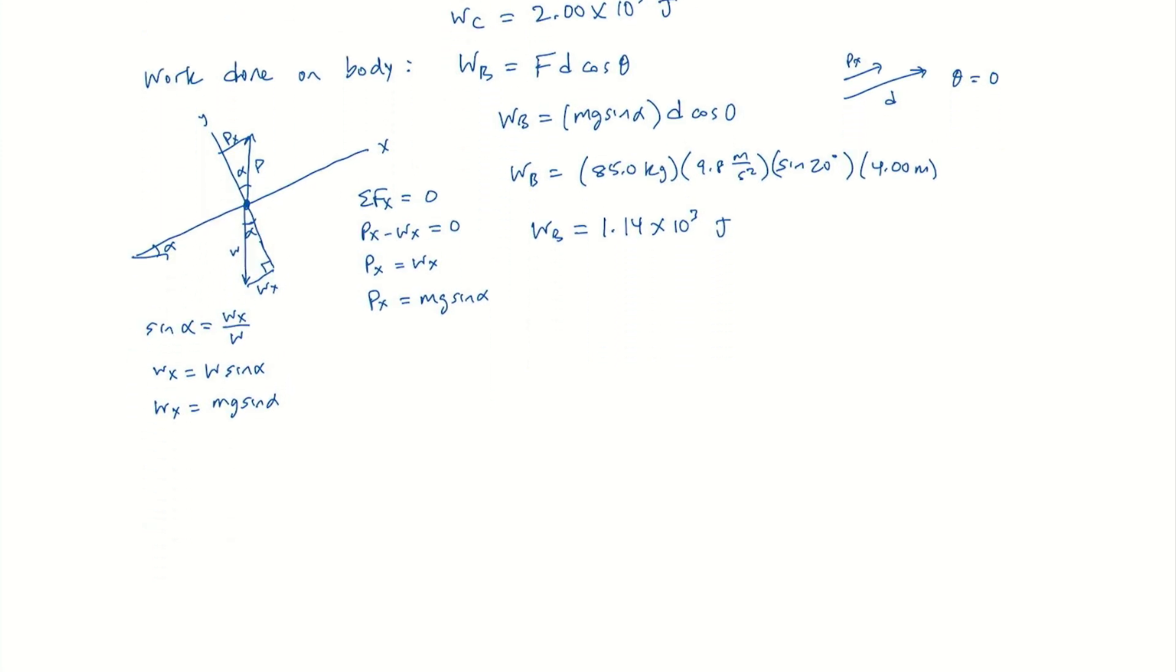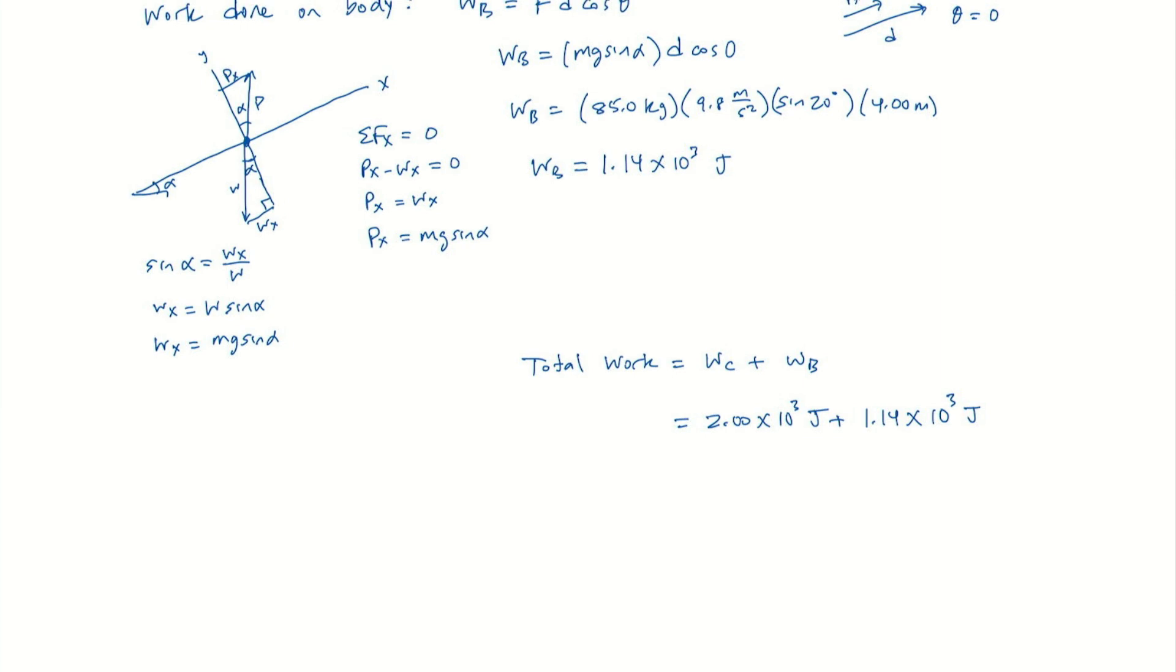So now the total work is going to be the work done on the crate plus the work done on the body. And so we have 2.00 times 10 cubed joules plus 1.14 times 10 cubed joules. Adding those up gives us 3.14 times 10 cubed joules.